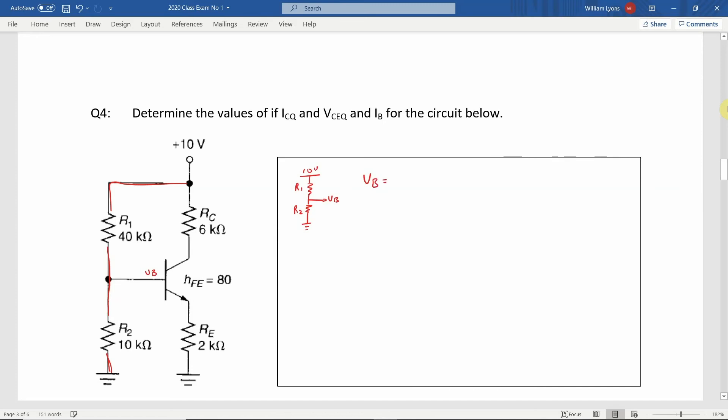This is effectively a voltage divider circuit. And as such, we can calculate the voltage VB using the voltage divider formula. This is VS times R2 divided by R1 plus R2. So by entering the values given in the circuit, this results in a value of VB, the voltage at the base, equal to 2V.